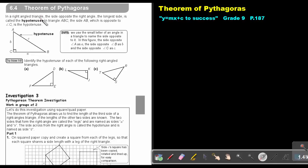In a right angle triangle, the side opposite the right angle, the longer side, is called the hypotenuse. In triangle ABC, the side AB, which is opposite to angle C, is the hypotenuse.